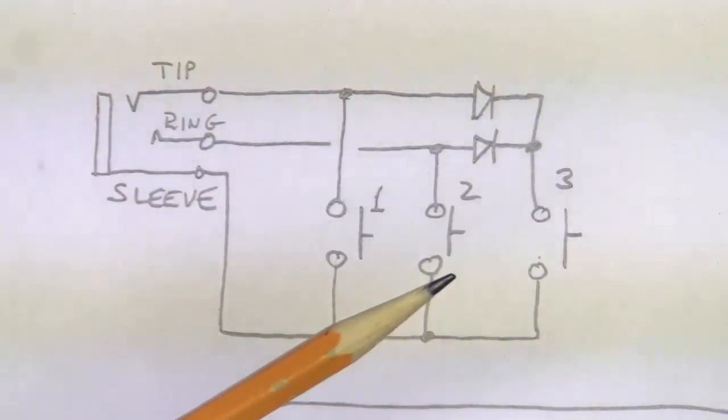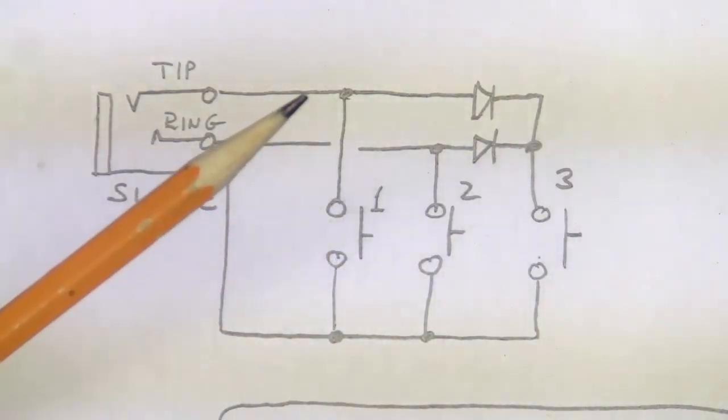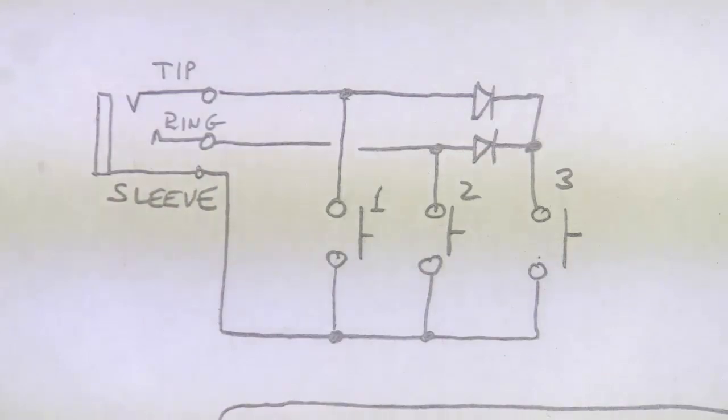When I push switch two, only the ring and the sleeve are connected together. And when I push switch one, only the tip and the sleeve are connected together.